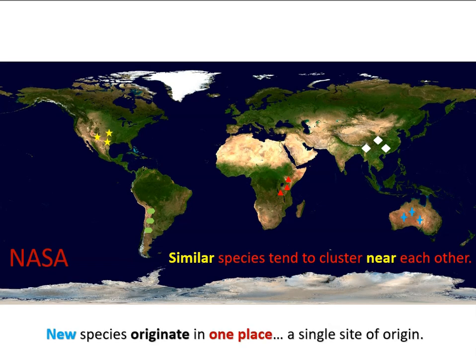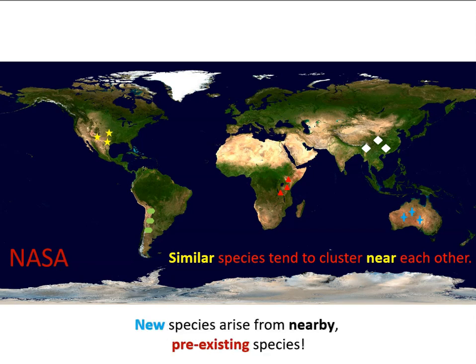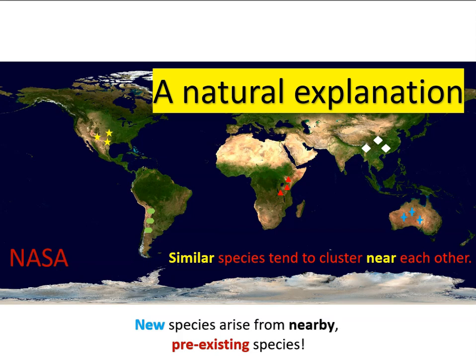Darwin is going to argue that new species originate in one place — a single site of origin. But from what do new species originate? Here's the great insight: new species arise from nearby pre-existing species. This is a natural explanation for species origin that obviously doesn't mention God. Darwin is claiming that species are the kinds of things that can change over time and in fact multiply — one species can become two.